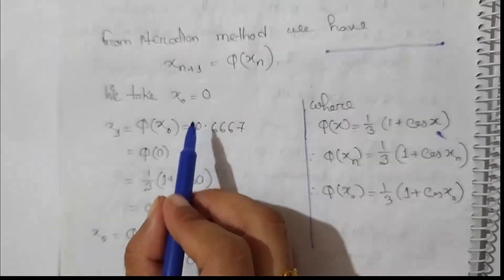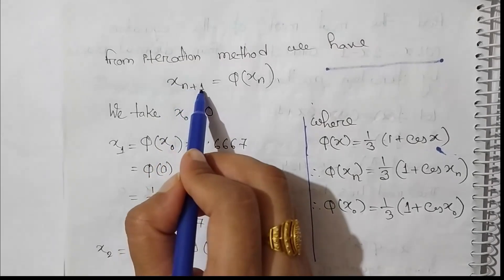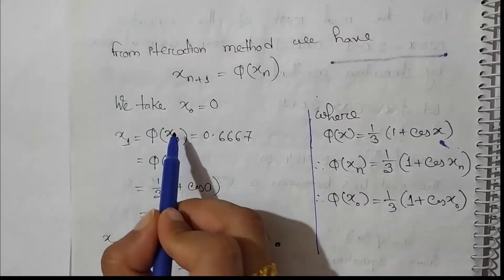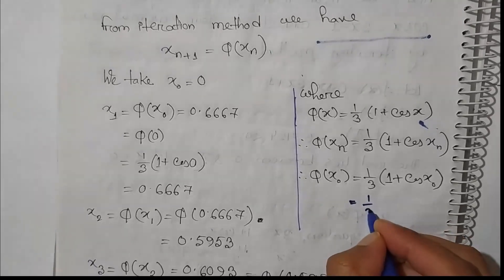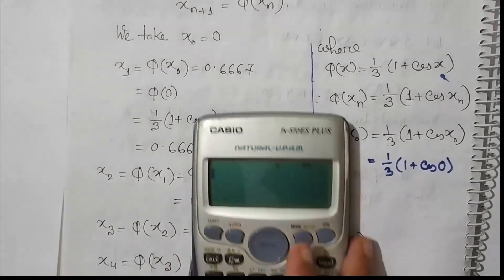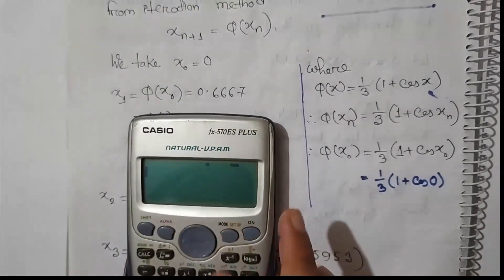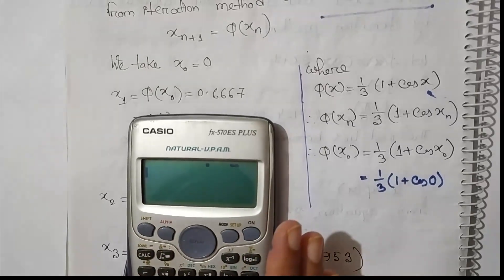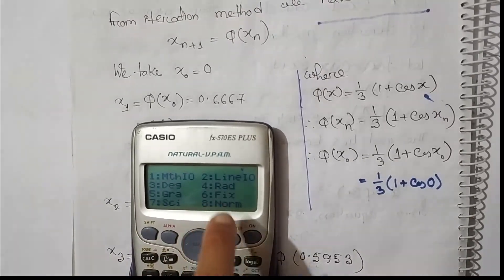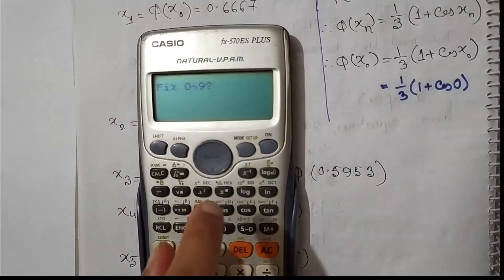If x₀ = 0, then x₁ = phi(x₀) = (1 + cos(0)) / 3. Let us do the calculation. We need to fix the calculator to 4 decimal places. Press the mode button, then press shift, then select radians mode.